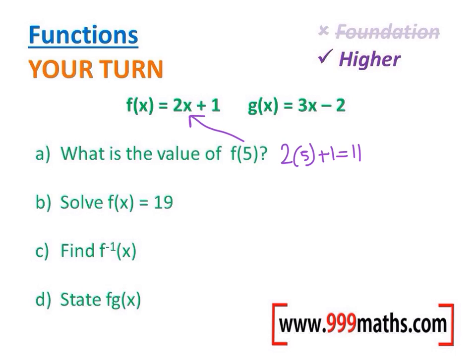Part b, where does the f equation equal 19? Start by writing the f equation equals 19 and then solve. And we're left with an answer of x equals 9. So 11 on the first one, 9 on the second one.